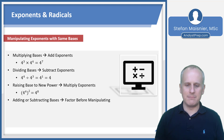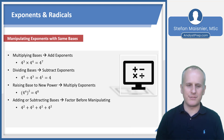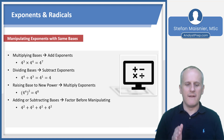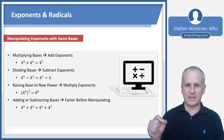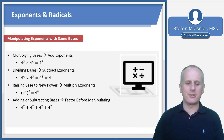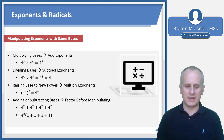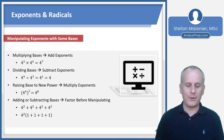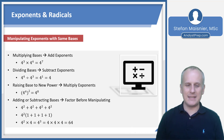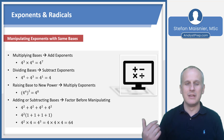If you are adding or subtracting like bases, you must factor before combining exponents. For instance, four squared plus four squared plus four squared plus four squared is not four to the eighth — that would be multiplication. Instead, factor four squared out of each term. You get four squared times (1+1+1+1), which is four squared times four, giving four to the third, or four cubed. Four times four times four is 64, which is indeed the result of adding four squared four times.